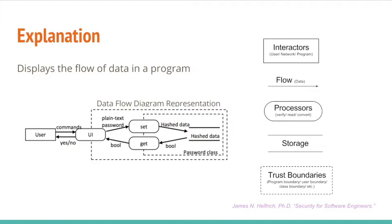Storage is represented by two solid lines, one above and one below the name of the storage. It is also often represented by a cylinder or cylindrical image. The storage can be in the program, in a file, in a database, and so on. If the user writes something to a file, what the user writes would be represented by an arrow from the interactor box to a processor. From the processor, an arrow would be drawn to a write file processor, and from there, an arrow would be drawn from the write file processor to the file storage.